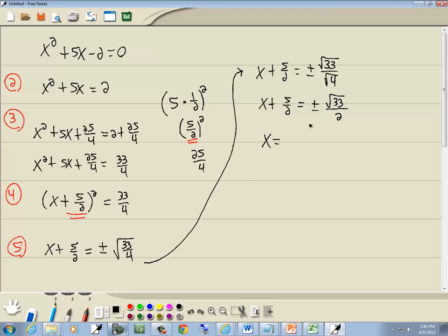Now, I'm solving for x, so I'm going to take the 5 halves over, and it becomes a negative 5 halves. Typically, simplified form means you get a single fraction, assuming you don't have an imaginary number. And this one's really nice, because they already both have the same denominator. So this becomes negative 5 plus or minus square root of 33 over 2 is our answer.